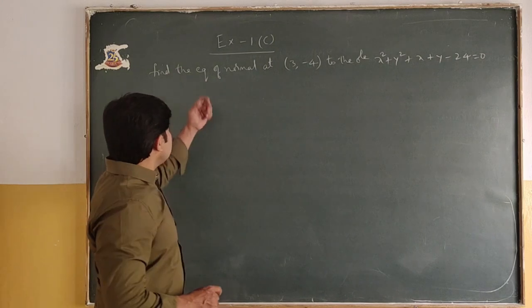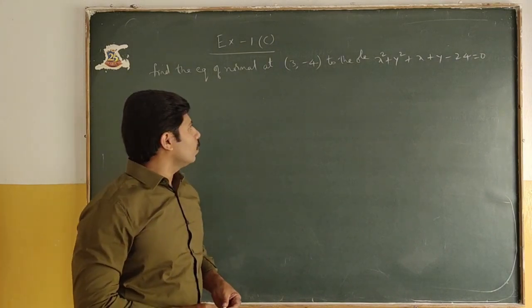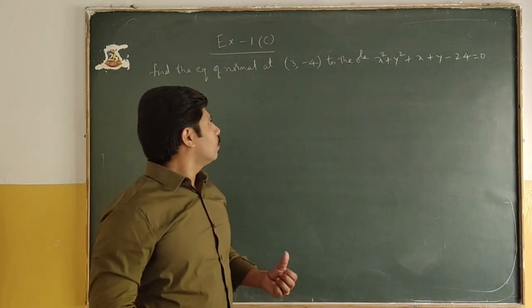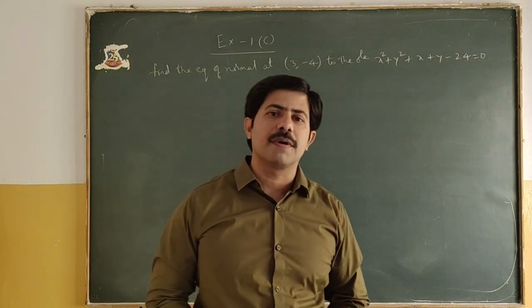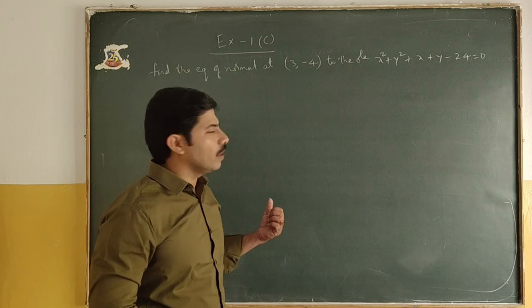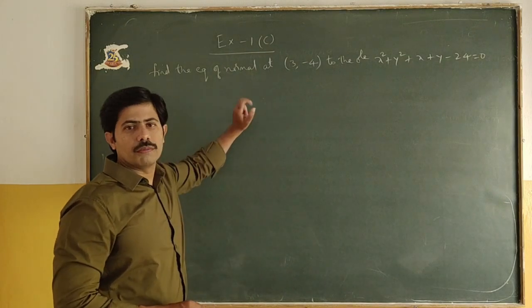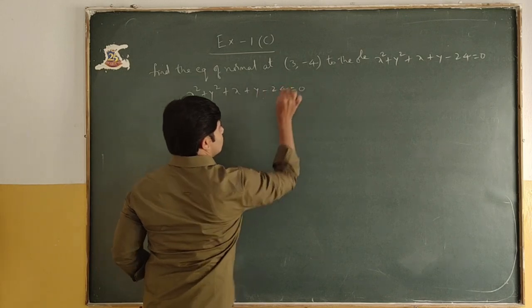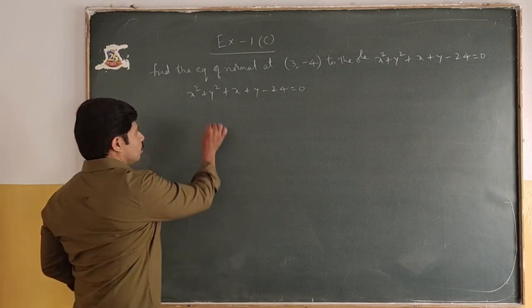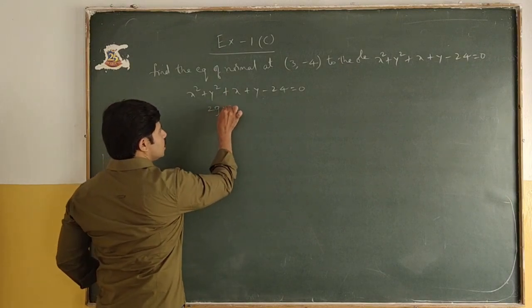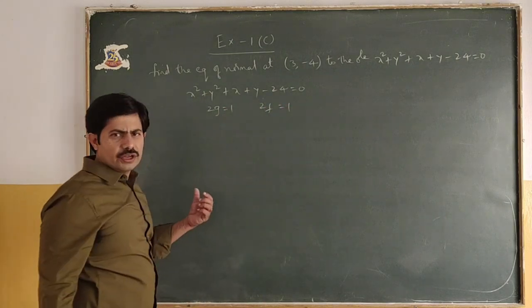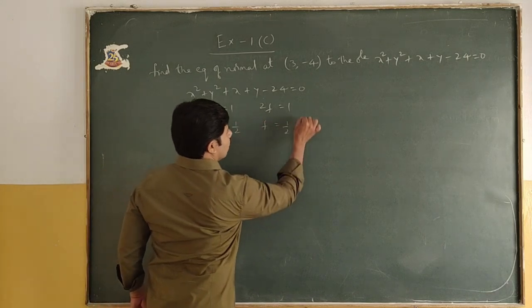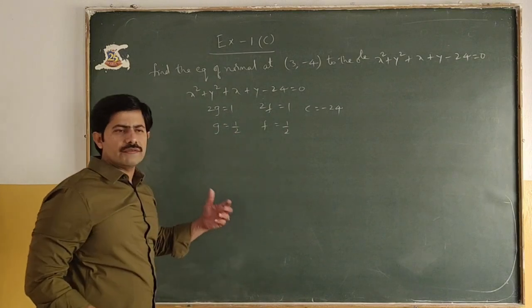Next question: find the equation of normal at (3, -4) to the circle x² + y² + x + y - 24 = 0. Normal is a line always perpendicular to the tangent. The circle equation is x² + y² + x + y - 24 = 0. From this: 2g = 1, so g = 1/2; 2f = 1, so f = 1/2; and c = -24.